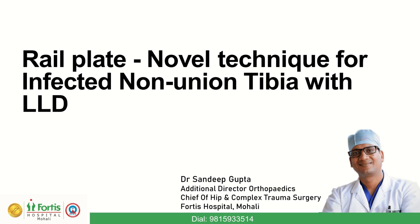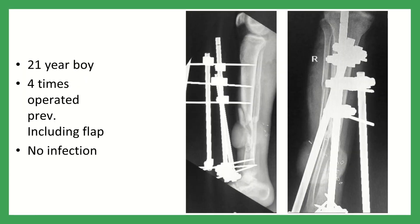The tibia is already shortened apart from being non-united. This is a 21-year-old boy who presented to us one and a half years after suffering a roadside accident, followed by a compound fracture of the tibia, which was four times operated outside, including plastic surgery for a distal flap.